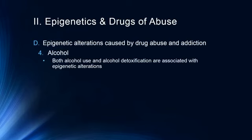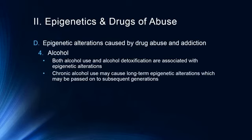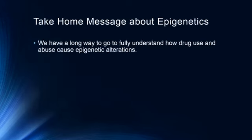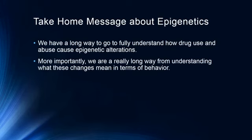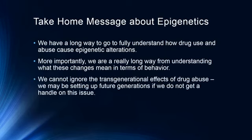Alcohol is another area with evidence for epigenetic alterations — both alcohol use and alcohol detoxification are associated with epigenetic alterations. Chronic alcohol use may cause long-term epigenetic alterations which may be passed on to subsequent generations. Interestingly, there is an epigenetic alteration during alcohol detoxification and we don't have a good handle on the long-term effects of that. The take-home message: we have a long way to go to fully understand how drug use causes epigenetic alterations, and an even longer way from understanding what these changes mean behaviorally. We cannot ignore the transgenerational effects of drug abuse — we may be setting up future generations if we don't get a handle on this issue.